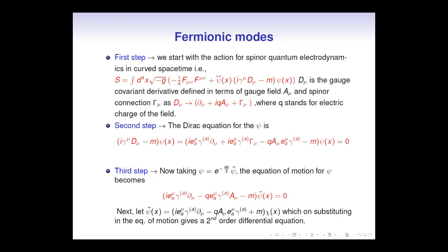Now let us discuss fermionic modes. In the first step, we started with the action for spinor quantum electrodynamics in curved spacetime. Here, D_mu is the gauge covariant derivative, defined as del_mu plus i q A_mu plus Gamma_mu, where A_mu is the gauge field and Gamma_mu is the spinor connection, and q is the charge of the field. In the second step, we wrote the equation of motion for psi: i gamma^mu D_mu minus m, times psi equals zero. In the third step, we took psi equal to e^(ax/2) times psi-tilde, and on substituting this, we modified the equation of motion accordingly.